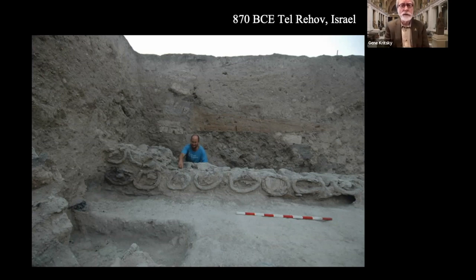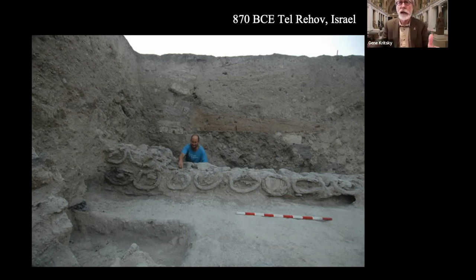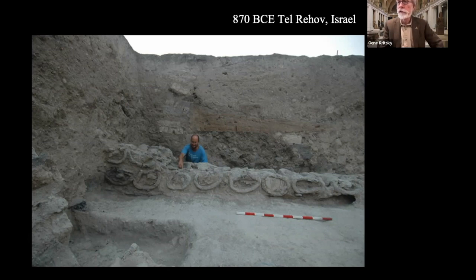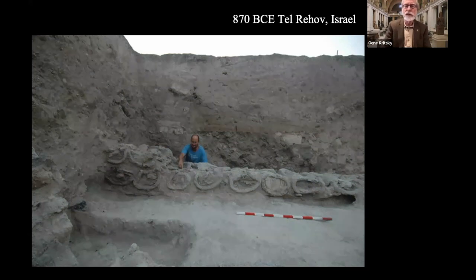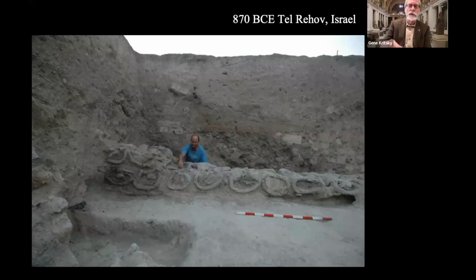Tel Rehov is an interesting location — during Shishak's raid of Jerusalem and Israel, Rehov was loyal to Egypt. This location had three tiers of beehives. It's thought these beehives were produced not so much for honey but perhaps for beeswax for lost wax casting — making copper vessels and artifacts. Lost wax casting was brought into ancient Egypt by the Hittites. The golden cobra and vulture heads on King Tutankhamun's mask were created by lost wax casting.